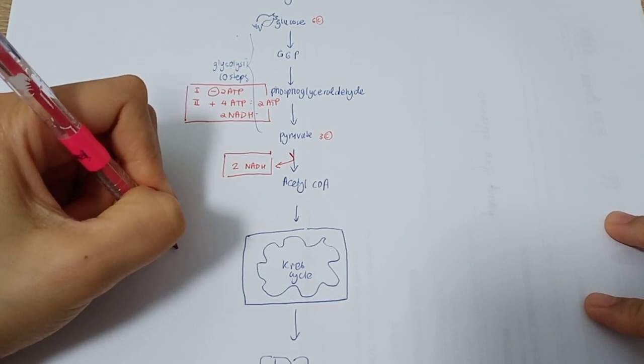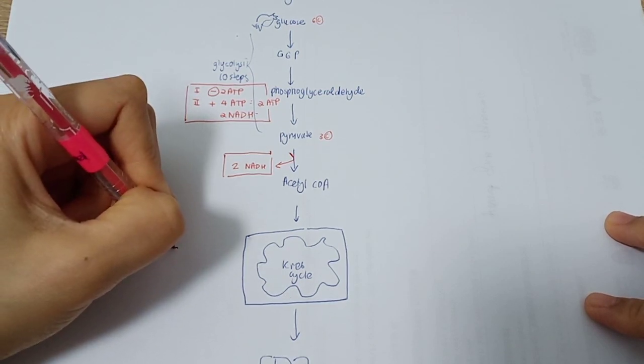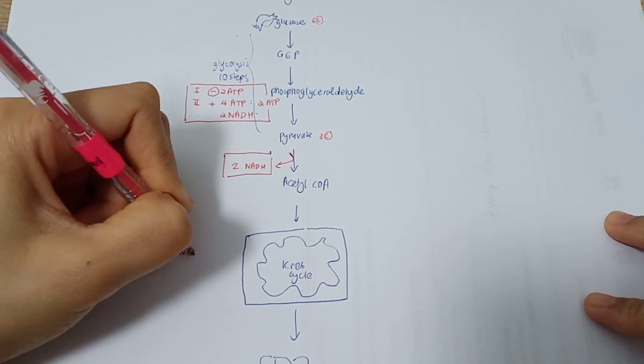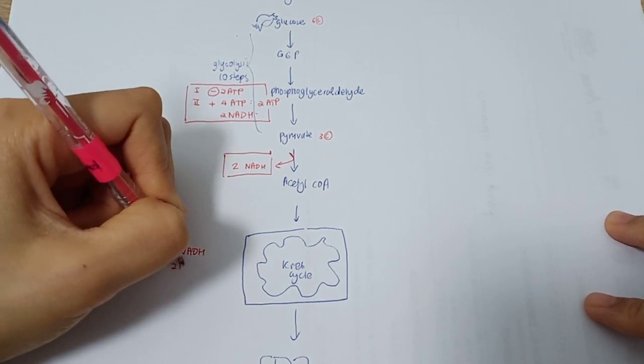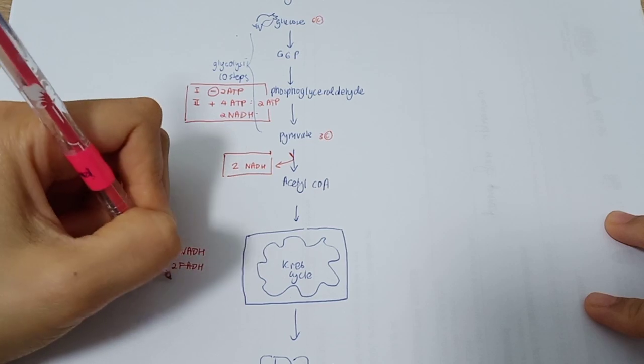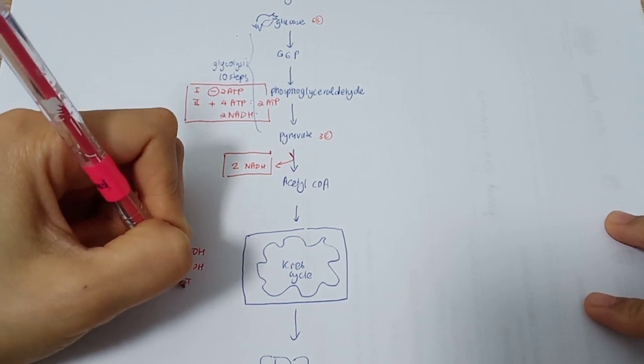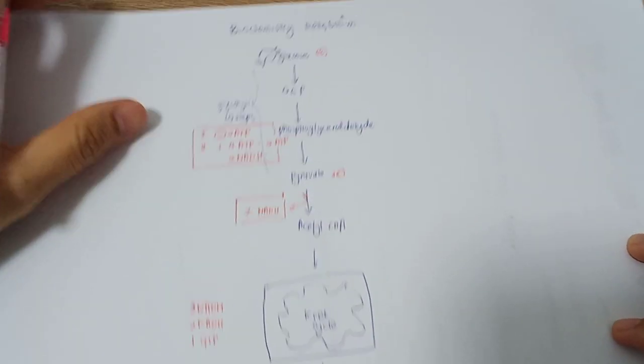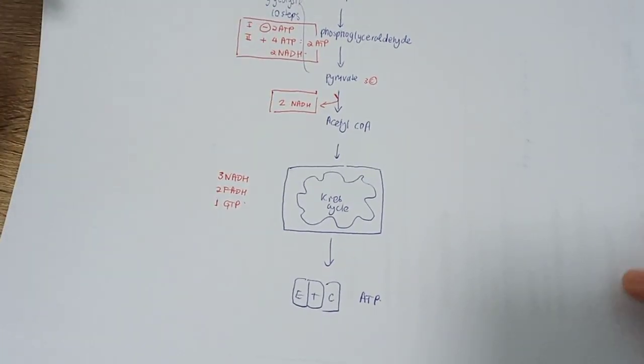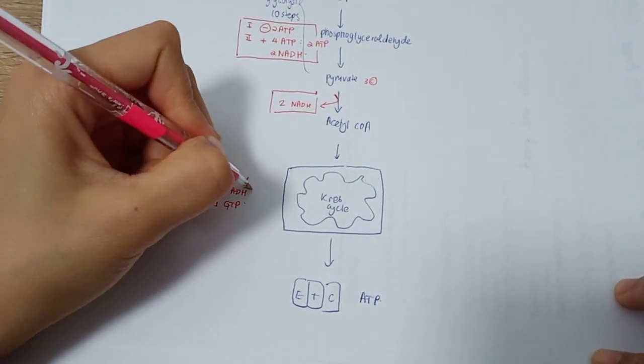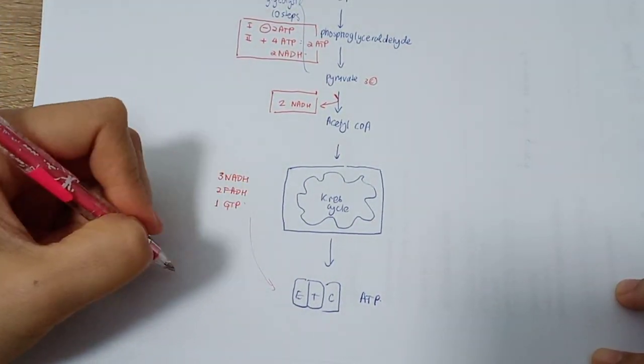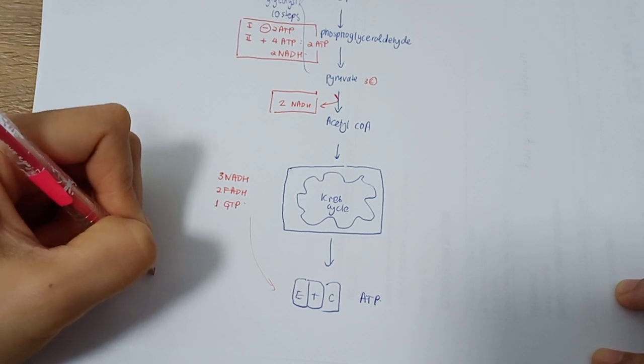In the Krebs cycle, the body will produce at least 3 NADH, 2 FADH2, and 1 GTP. This will be shunted into the ETC.